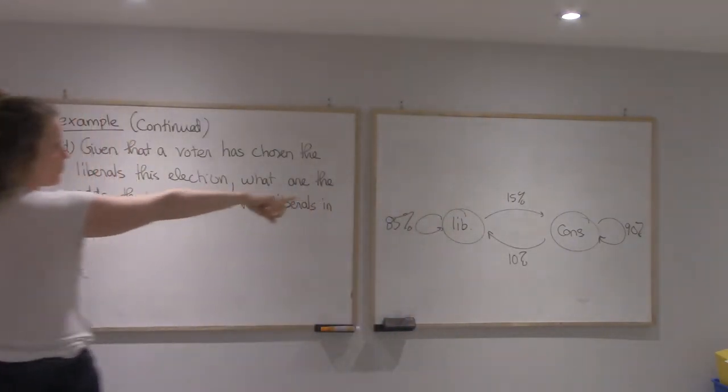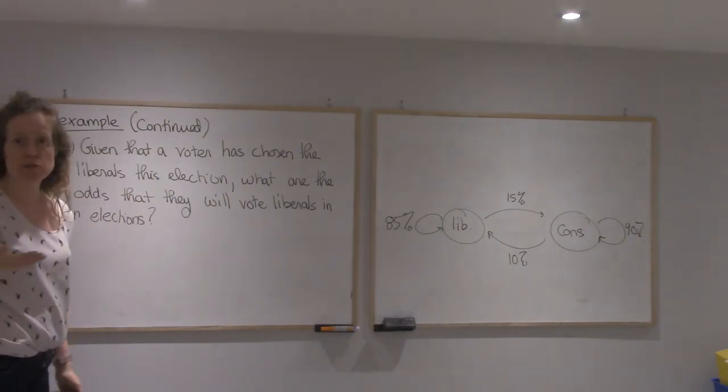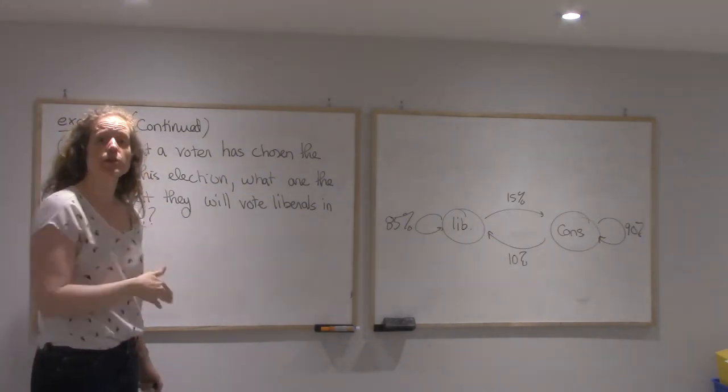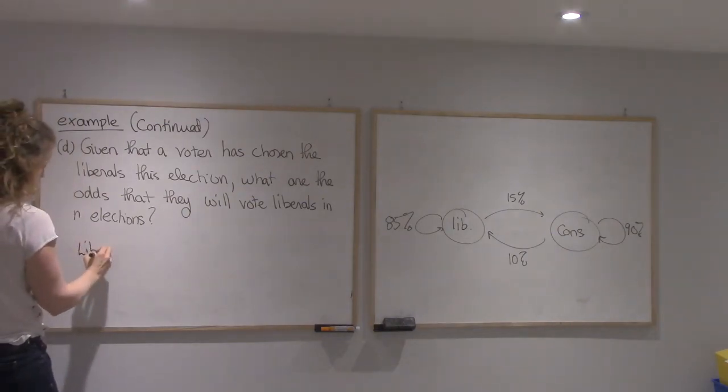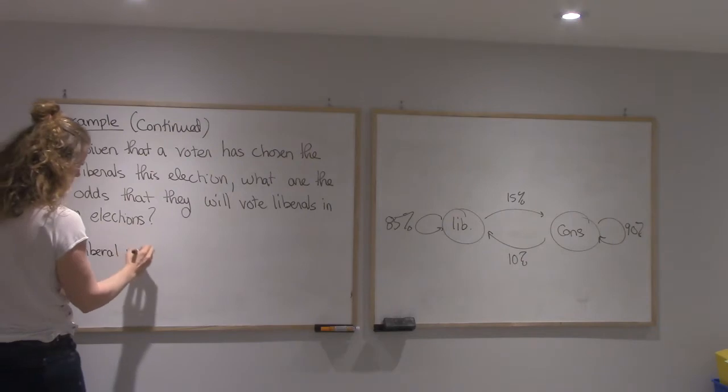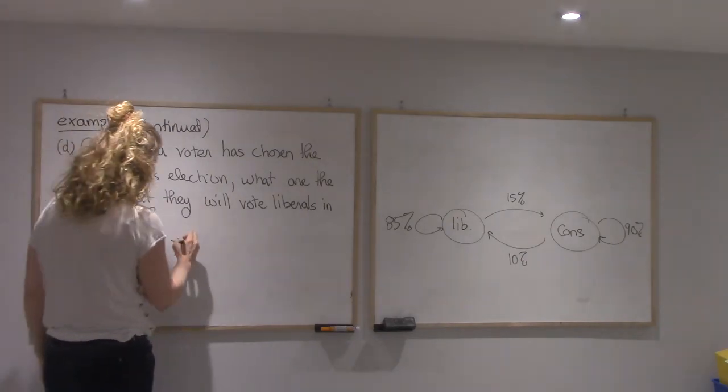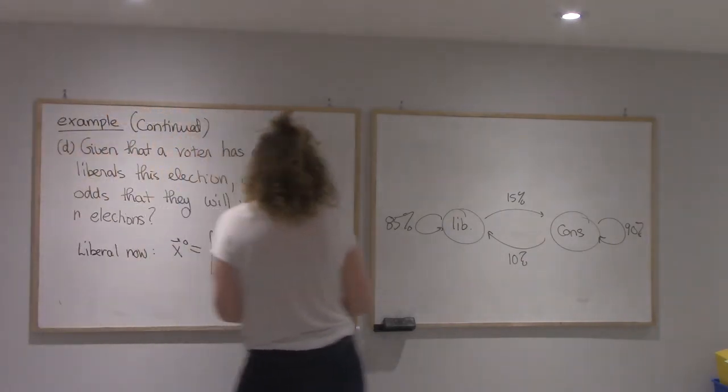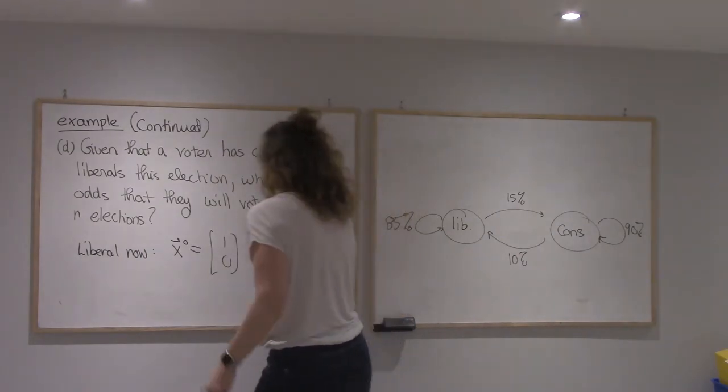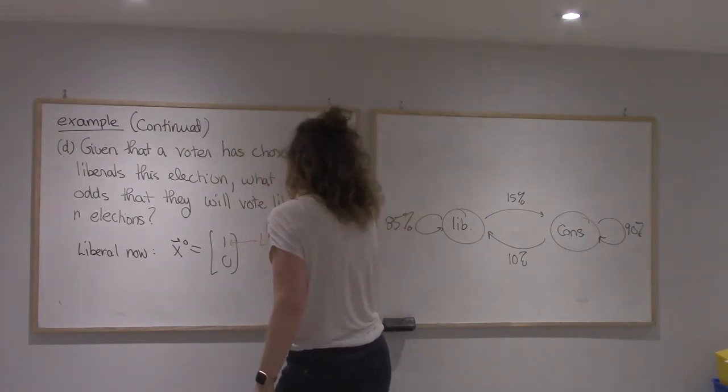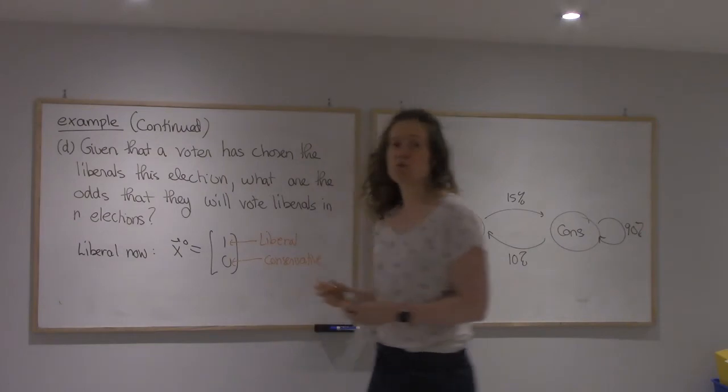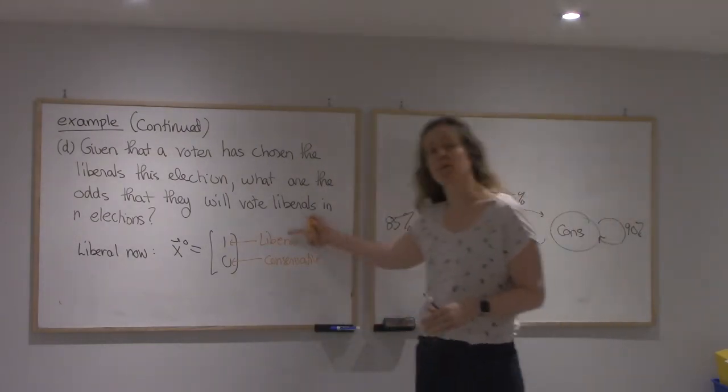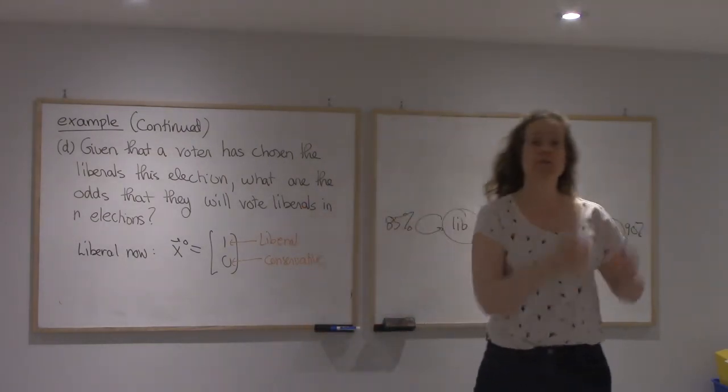All right, so I drew back that diagram. I'm going to use the transition matrix and a state matrix. So since they vote Liberal now, that means that my starting state will be 100% Liberal. So I'm going to use Liberal as the first state and Conservative as the second. It doesn't matter which one you choose, but you have to be consistent. You have to use the same order for your state vector and for your matrix.